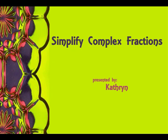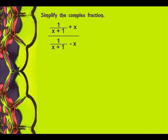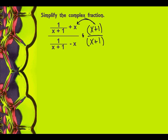Simplify complex fractions. Simplify the complex fraction. What I like to do is look in the numerator first and say, what would my common denominator be up here? Well, it would be x plus 1. Then I look in the bottom and say, what would my common denominator be here? Once again, x plus 1. So that pretty much tells me what I'm going to be multiplying by — x plus 1 times everything in the numerator and x plus 1 times everything in the denominator.